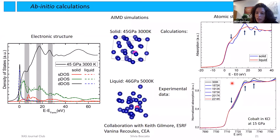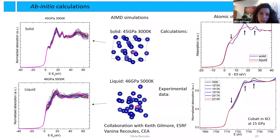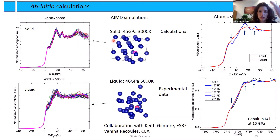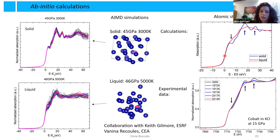We used these calculations to understand why we lose the features. In a solid, each atom used as an absorber gives a spectrum similar to the others, meaning all atoms see the same atomic configuration around them. In the liquid, each atom still produces a spectrum full of features, but those features differ between atoms. When we average all of them, we get a featureless spectrum. Therefore, the loss of features is associated with the appearance of multiple configurations in the liquid.